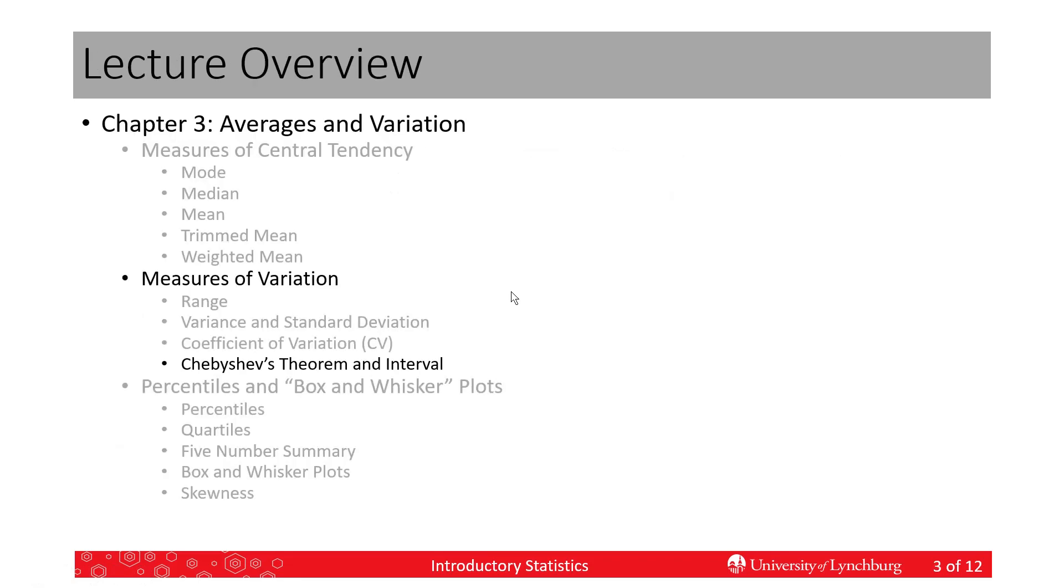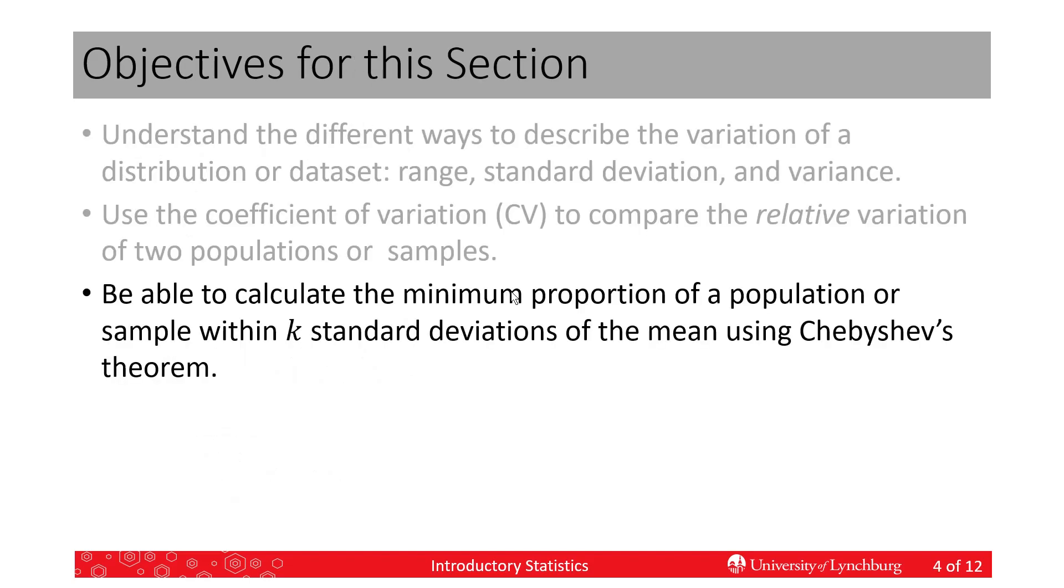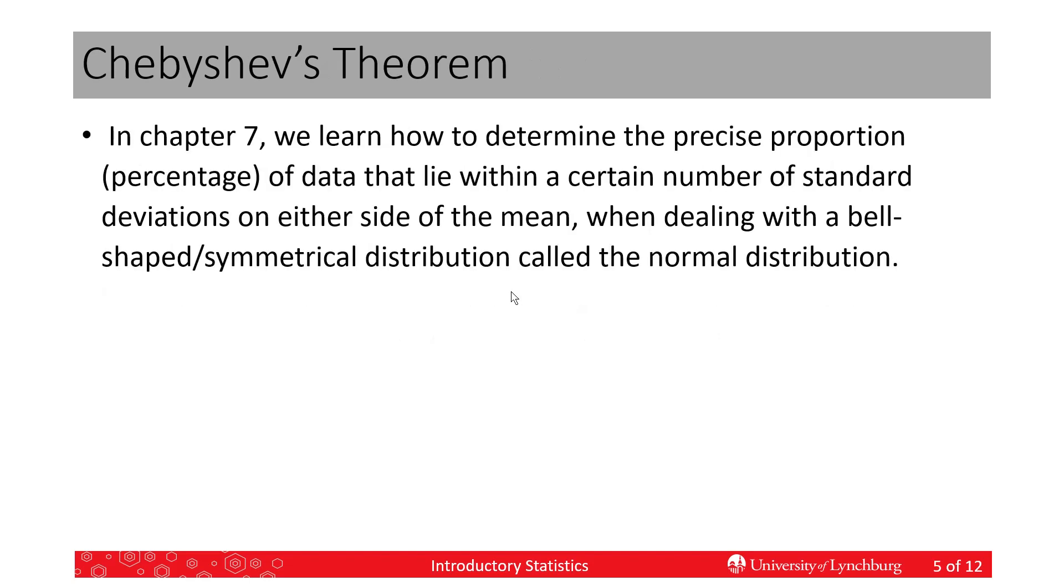So in this lecture, we're going to talk about another measure, another characteristic of variation using, or how to describe how much variation there is, using Chebyshev's theorem and interval. So we're covering this third objective for the section, to calculate the minimum proportion of a population, or a sample, that is within k standard deviations of the mean, using Chebyshev's theorem.